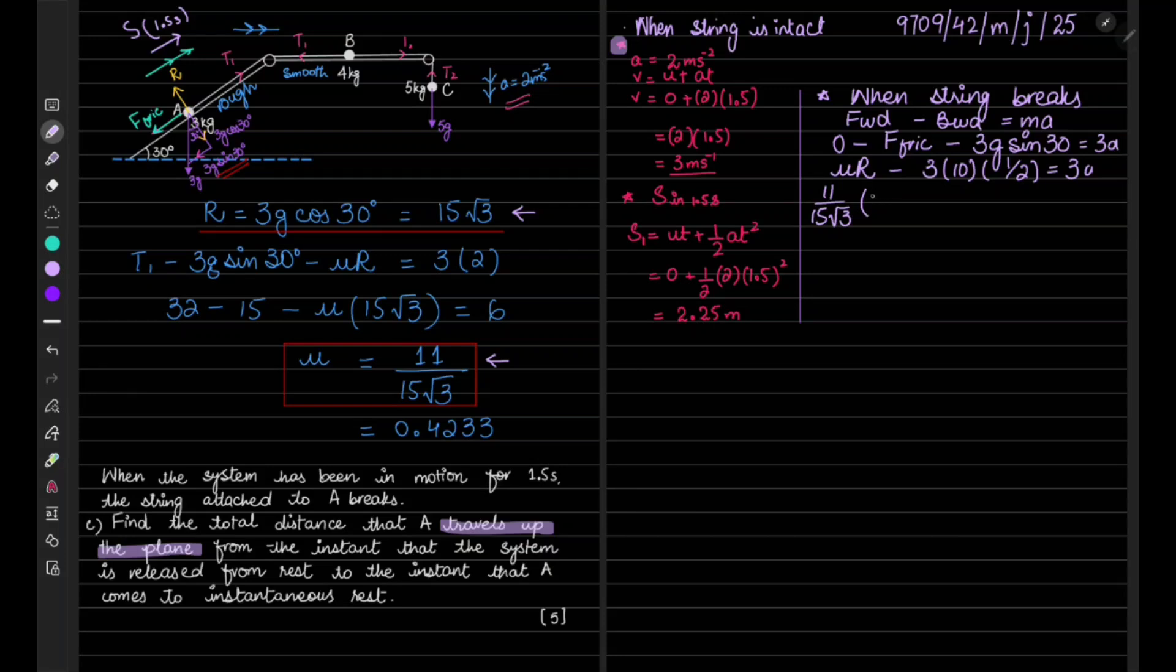Now what is mu? This is the value for mu and this is the value for R. So mu is 11 over 15 root 3, and R is 15 root 3 minus 30 over 2 is 15, equals 3a. So 11 minus 15 is minus 4.